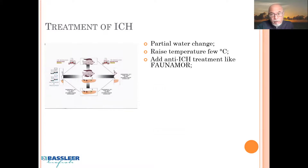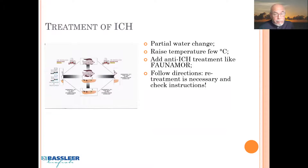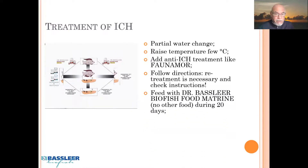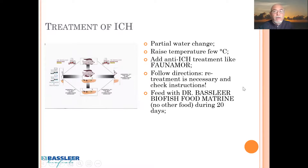Add an anti-ich treatment — there are many available. I can recommend Faunomor from Aquarium Münster. Follow the directions carefully, as the instructions require retreating on a regular basis, so make sure you have enough medication to cover the full cycle of the parasitic infection. Also use Dr. Bassleer Biofish Food Matrine — don't substitute another food. Use it for 20 days so the fish accumulates enough matrine and oxymatrine in the mucus, gills, and skin. It acts like a repellent, repelling the parasites so they cannot re-infect. This food is a supplement, not a medication — it helps the fish protect itself.